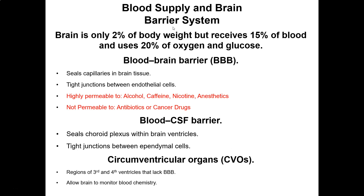Blood supply to the brain and the blood-brain barrier: the brain is only 2% of body weight but receives 15% of blood and uses 20% of oxygen and glucose. The blood-brain barrier seals capillaries in brain tissue with tight junctions between endothelial cells. It's highly permeable to alcohol, caffeine, nicotine, and anesthetics — these can pass in and out with no problem. However, it is not permeable to antibiotics or cancer drugs. That's why it's very difficult to treat brain cancer with chemotherapy — the blood-brain barrier stops it from crossing, making surgery and radiation the go-to treatments.